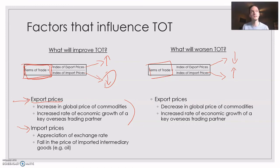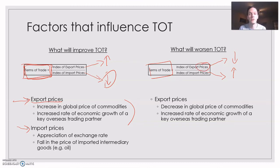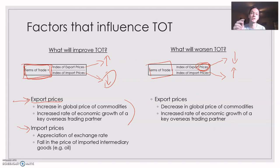For export prices, they need to fall. What might cause a fall in what we sell overseas? It could be a decrease in the global price of commodities. A lot of the commodities that Australia sells have a global price based purely on supply and demand in the global economy — the price for coal, for example. If there is an oversupply of coal in the global market, that's going to drive prices down, and the price we get for that coal will fall. When we're talking terms of trade, we don't actually care whether we've sold more or less of the stuff — it's just what has happened to the price. If on average the prices of our exports fall, that's going to make the terms of trade go down.